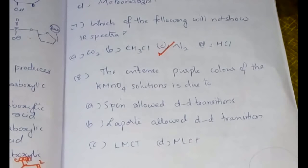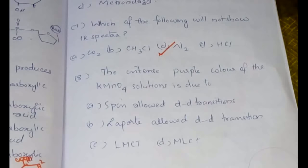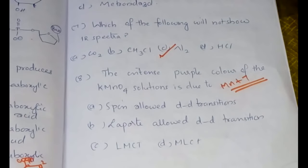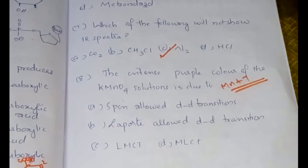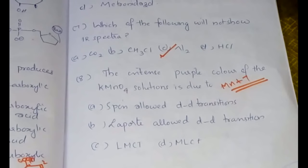The intense purple color of KMnO4 solutions is due to: you definitely know that d-d transition will not be there because in KMnO4 the Mn is in +7 oxidation state. Therefore, there are no electrons for d-d transitions and there is no Laporte-allowed or spin-allowed d-d transition.